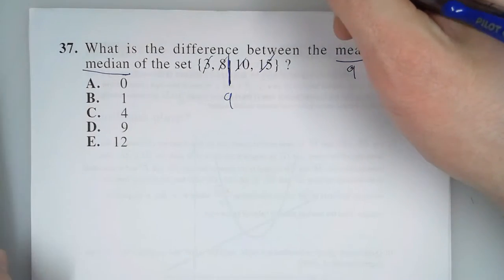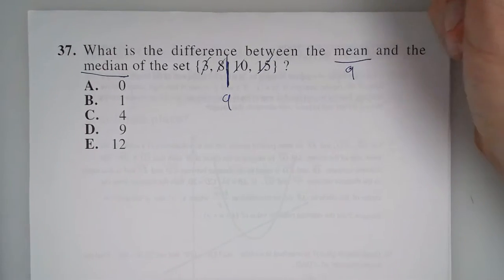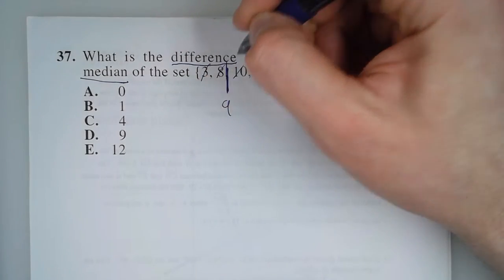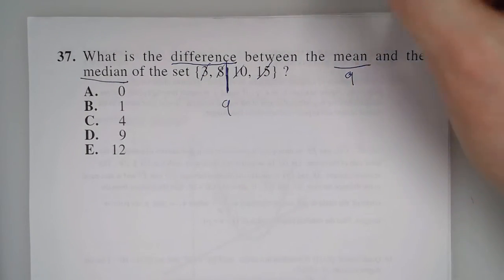So the median and the mean are both 9. So how much do they differ by? Well, difference is what you get when you subtract. So 9 minus 9 is 0.